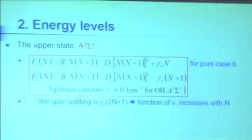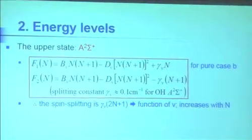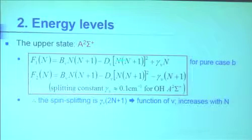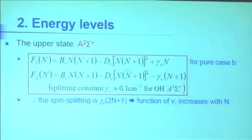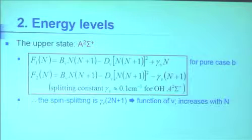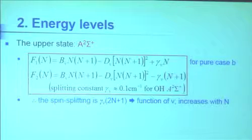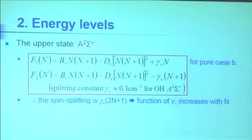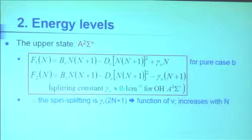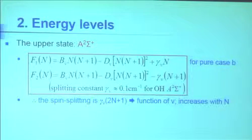For the upper state, if it were a pure Hund's case B, you could write the equations in this form. F₁ and F₂ differ in that one is J equals N plus a half and the other is J equals N minus a half. The spin-spin splitting — about 0.1 wave numbers — means for a given N, J of N plus a half and J of N minus a half are split by approximately 0.1 times N. If N is 10, this is 1.9 wave numbers. It's a good model.